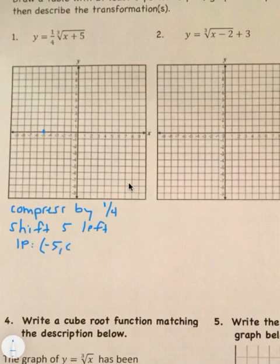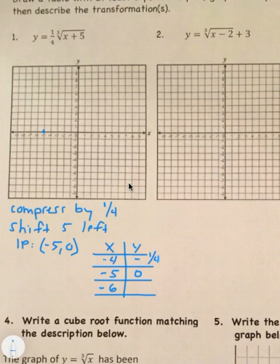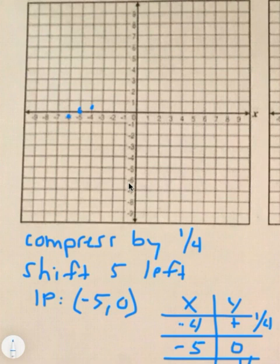Using negative five, zero as the middle point, I'll use x equals negative four and x equals negative six. For negative four: one-fourth times the cube root of negative four plus five equals one-fourth times the cube root of 1, which gives positive one-fourth. For negative six: negative six plus five is negative one, so the cube root of negative one is negative one, times one-fourth gives negative one-fourth. These points show the graph staying very flat.